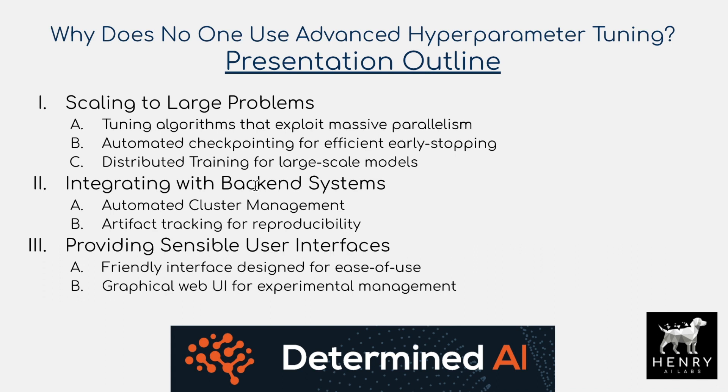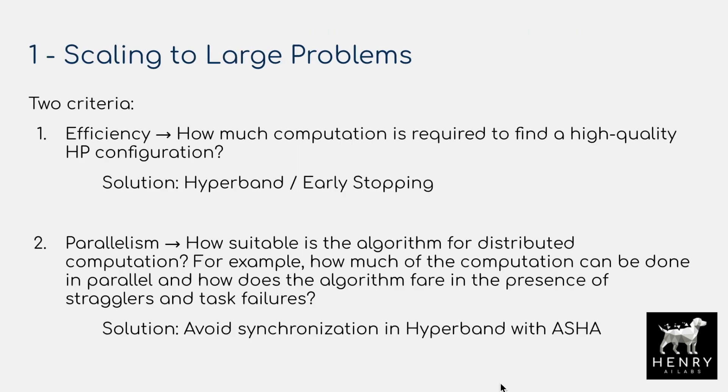Finally, providing sensible user interfaces — not just web UIs for clicking and browsing, but interfaces that integrate with your code. The issue of scaling to large problems: we're training massive deep neural networks that take maybe hundreds of thousands of GPU hours. Training takes many batches of data and a long time for each individual configuration of the hyperparameters, let alone searching through hundreds or thousands of them. The two criteria highlighted are efficiency and parallelism.